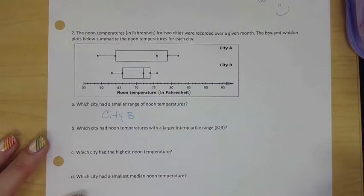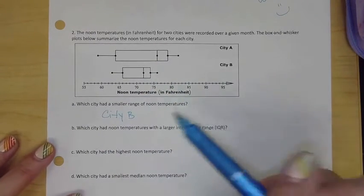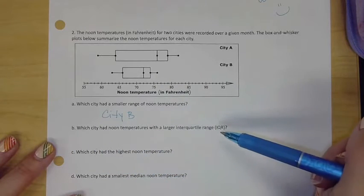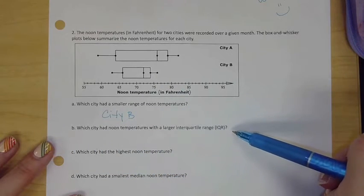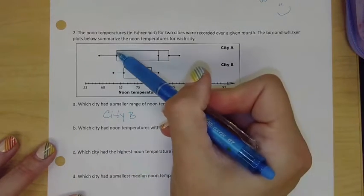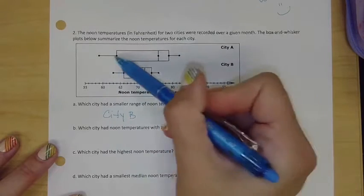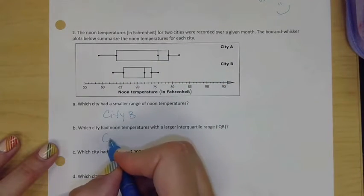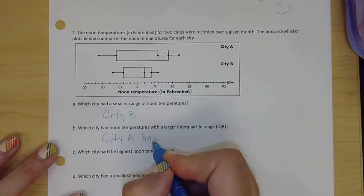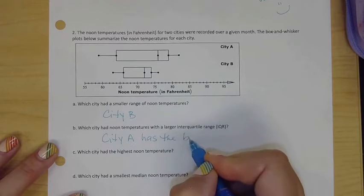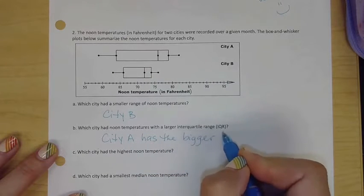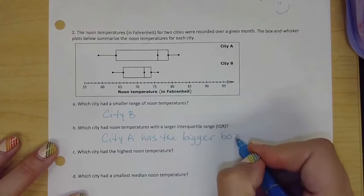Which city had noon temperatures with the larger interquartile range? If you remember, that is the actual box, and the bigger box is City A. I'm going to say that the bigger box in the box plot, right?